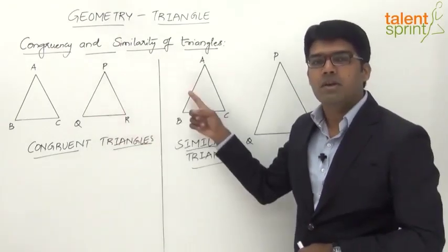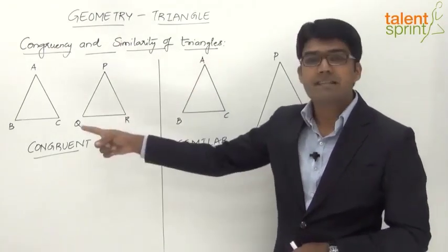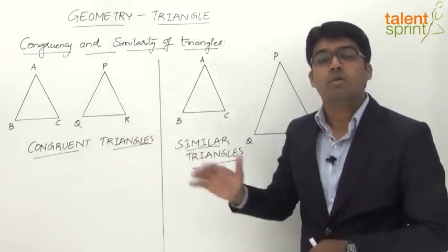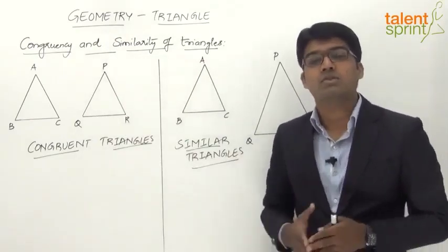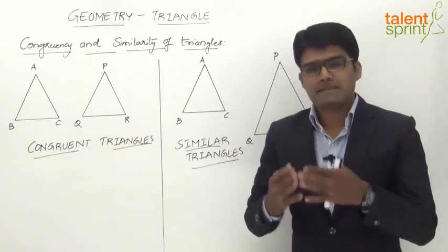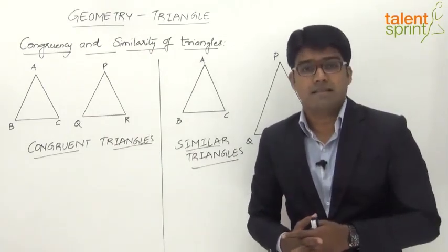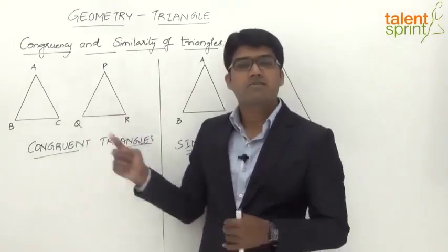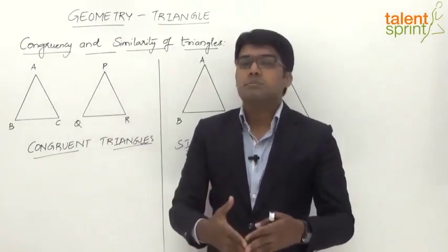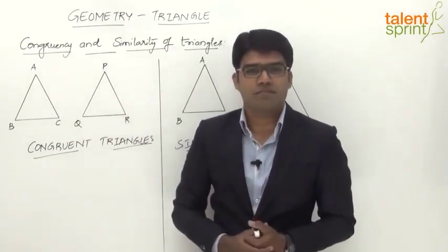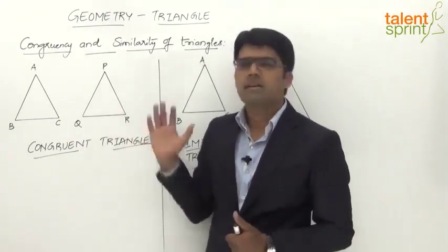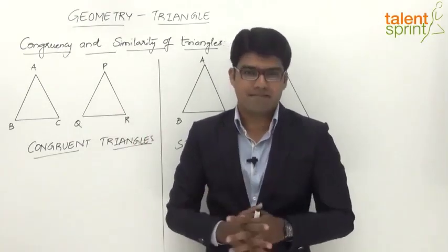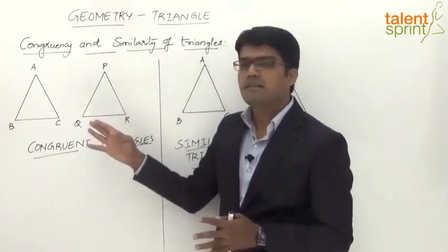Congruent triangles are exactly the same not only in shape but also in size. The three angles are equal to the three corresponding angles of the second triangle, and the three sides are equal to the three corresponding sides. This means if we superimpose one triangle on the other, they will coincide perfectly without any deviation.